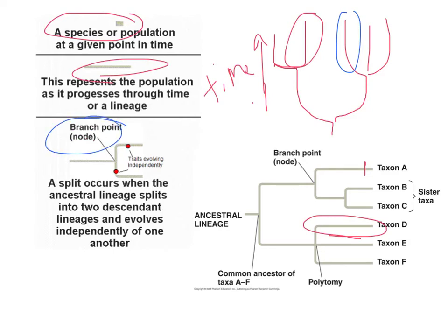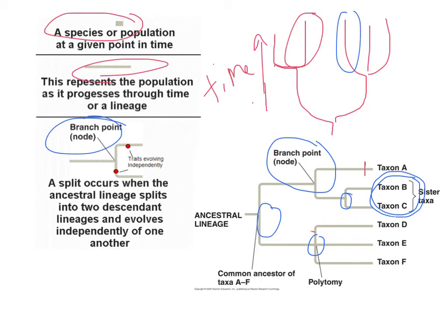One of the most important things is the branch points or nodes — this is where the split happens, where divergence occurs and two populations go their separate directions, leading to different species. A branch point should give rise to only two lineages. When you have more than two — like D, E, and F — that shows the node is unresolved: something else separates that third one out, but we may not have found it yet.